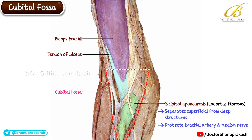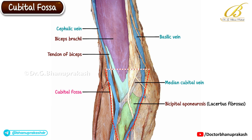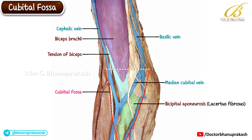Among the superficial veins, we can see the cephalic vein on the lateral side and the basilic vein on the medial side. These two veins are connected by the median cubital vein which runs obliquely across the fossa. This median cubital vein is the preferred site for venipuncture and intravenous cannulation because it lies superficial to the bicipital aponeurosis, making it stable and less likely to move during needle insertion. Additionally, the aponeurosis offers protection to deeper structures like the brachial artery and median nerve during such procedures.